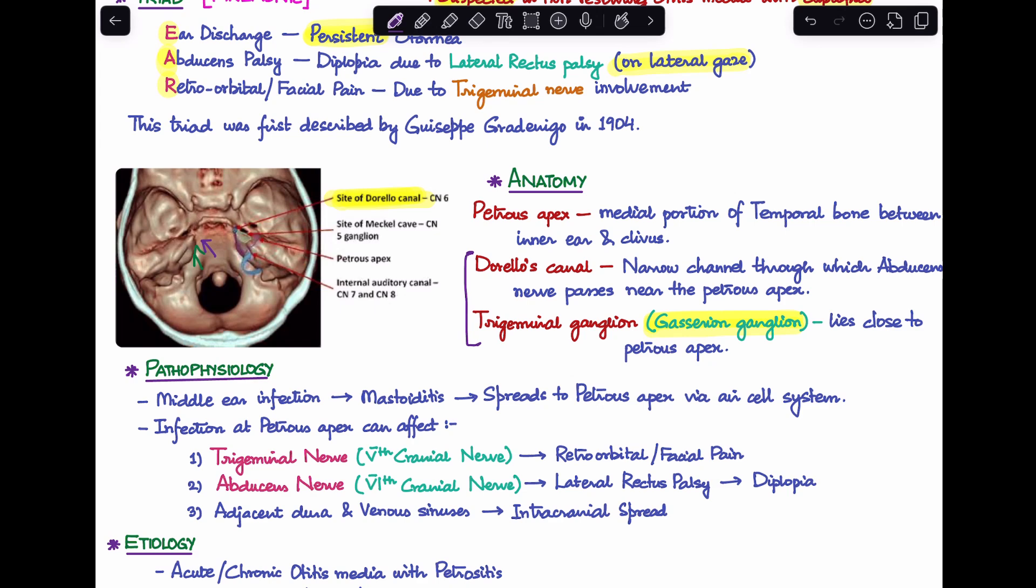If we look at the pathophysiology behind the disease, it starts with a middle ear infection which is otitis media that can be acute as well as chronic. As the disease progresses, it causes mastoiditis and then it can spread to the petrous apex via the different air cell tracts that are present.